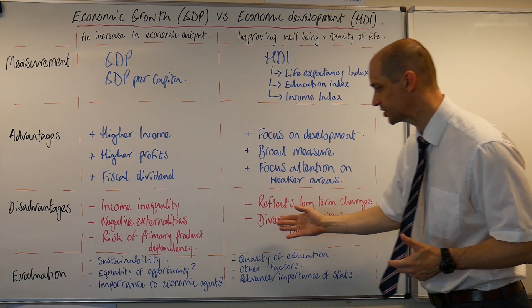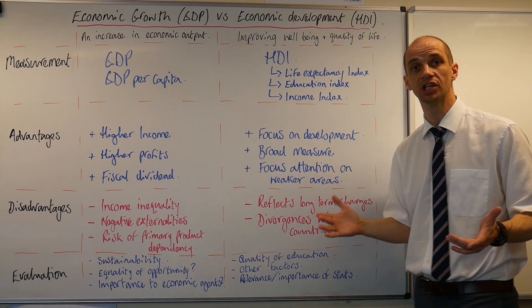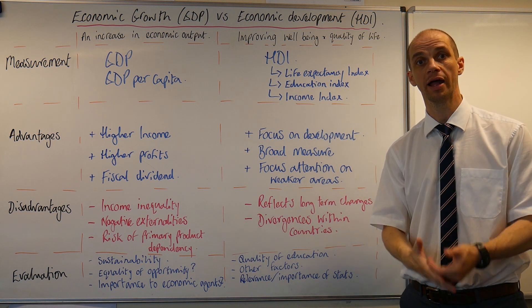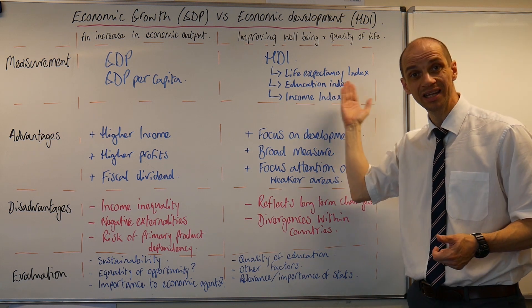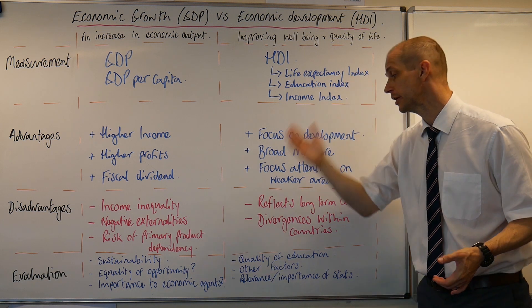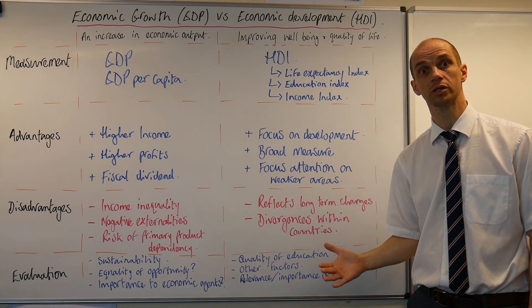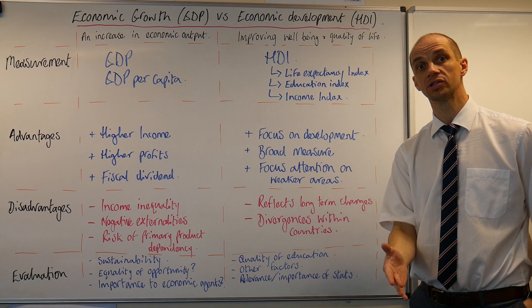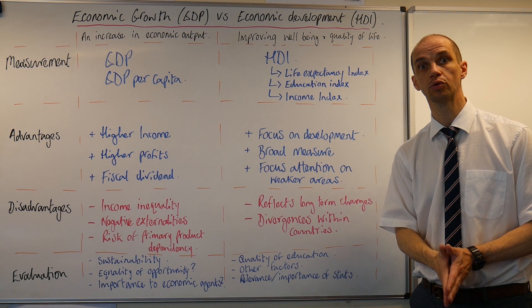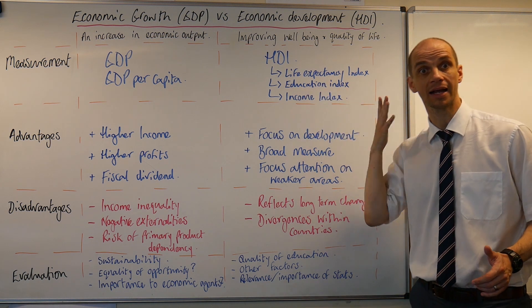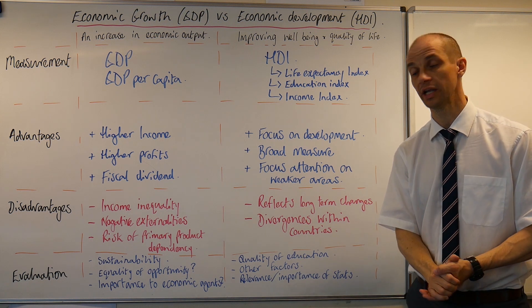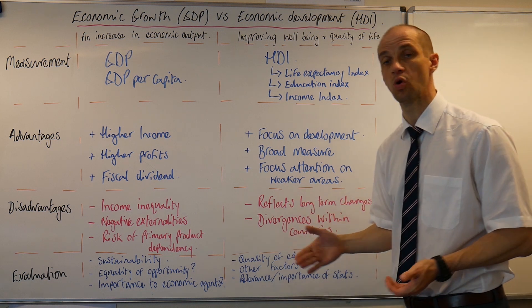When it comes to the HDI, this is about a longer-term change really. If you do improve healthcare in a country, it may actually take time before that's reflected in life expectancy. Divergences within countries will also exist, and some areas can be more difficult to provide for. Those living in the most rural communities may still struggle to access good quality education, even though a lot of investment may take place in providing that — so there can be those wide divergences.